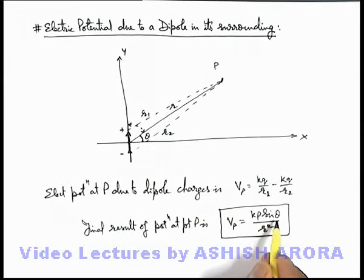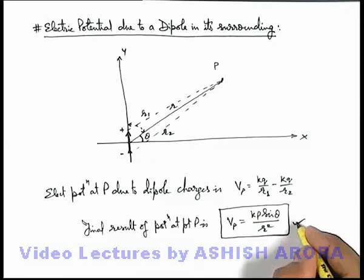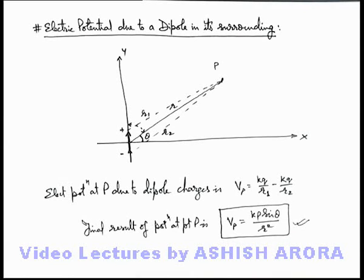Instead of sine theta we need to use cos theta because it'll be pi by 2 minus theta. So just keep this result also on your tips for various applications.